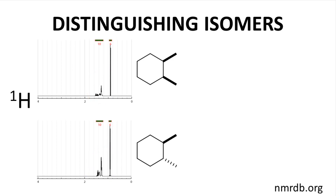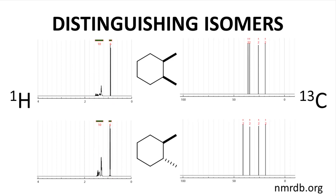Now let's look at simulated C13 spectra. These are much more different. Sometimes by looking at the carbon nuclei instead of hydrogen nuclei, one can find data that more clearly distinguish one compound from another.